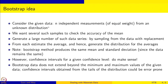The idea in the bootstrap method is as follows: you consider the given data, there are n independent measurements of equal weight, but we do not know from which distribution these data are sampled. We are assuming n independent measurements of equal statistical weight, just that we do not know the distribution. To accurately calculate the mean, you need to know the distribution from which the mean comes, which means you need several such samples. Bootstrapping is a method to generate such samples from the existing dataset.